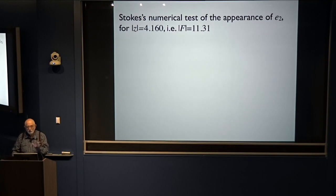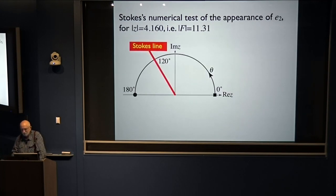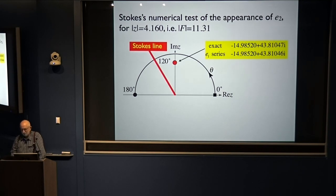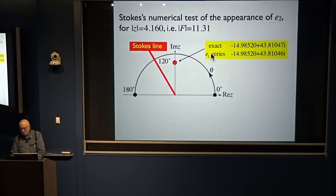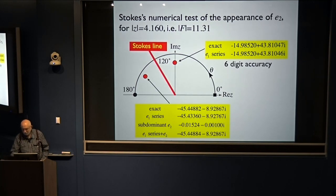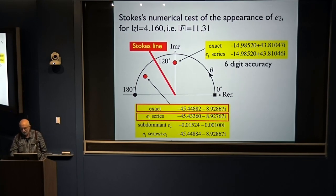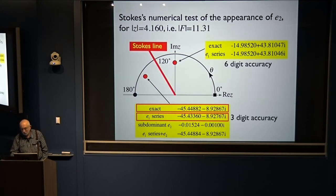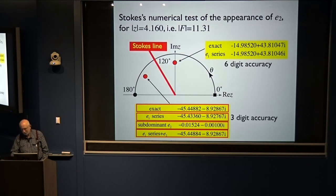He tested this numerically — and I've recalculated exactly what he calculated. Take z equals 4, f equals 11, 11 terms in the series. He calculated the exact value using the convergent series. Here's the asymptotic series for the first section down to its smallest term, and you get six-digit accuracy. On the other side, the exact has a number. The first series — this exponential continued — only gives three-digit accuracy. But if you include the subdominant, small exponential, and add it to what you had from the first one, you again get six-digit accuracy. This demonstrates that you really need this, and it happens across a Stokes line.